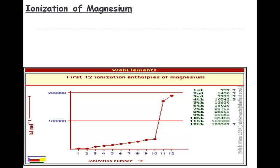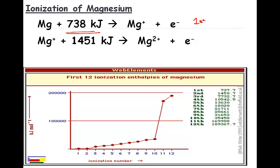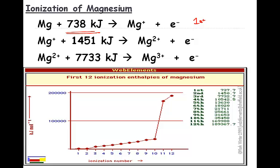Looking at ionization energies for specific elements: magnesium requires 738 kilojoules of energy to remove one electron — the first ionization energy. Removing a second electron from magnesium requires 1,451 kilojoules. Removing a third electron would require 7,700 kilojoules. Each subsequent ionization energy is going to be increasing.